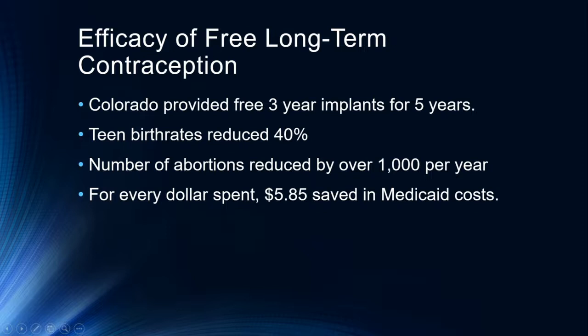From a cost savings perspective, for every dollar spent, five dollars and 85 cents was saved in Medicaid costs — this was saving the state money. Unfortunately it was not continued, partly due to moral arguments that people who want to have sex should pay for it themselves. Despite the fact that spending the money saved money, this was an investment in savings. If we think about that 40% reduction in teen pregnancy, those are individuals who continued their education, had higher incomes, and paid more in taxes. Providing free long-term contraception is, in my view, a no-brainer.